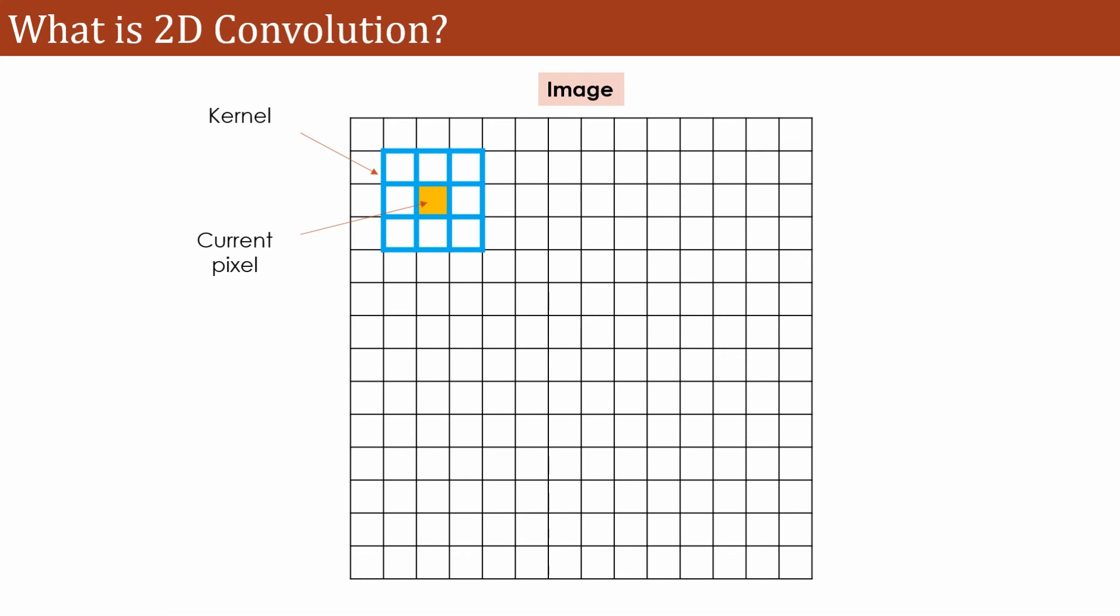Now for the next nearby neighbor, if you want to change the value of the next pixel, again the kernel will be slid just like here. And that way all pixel values of the image will be changed.